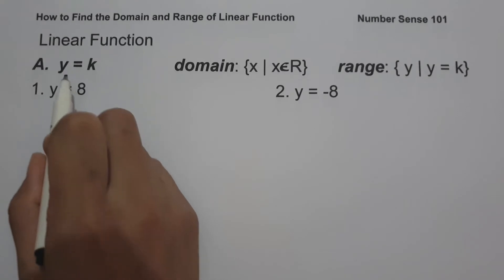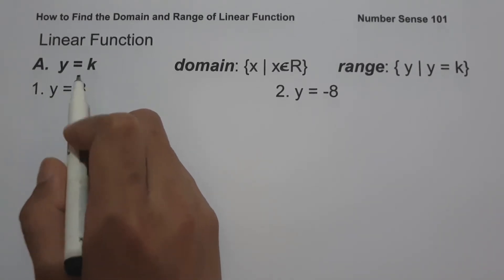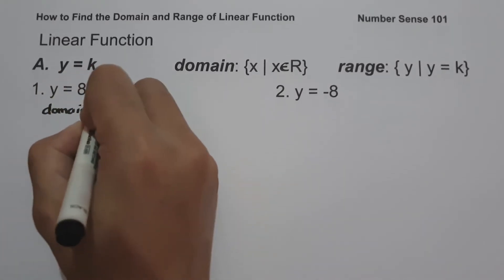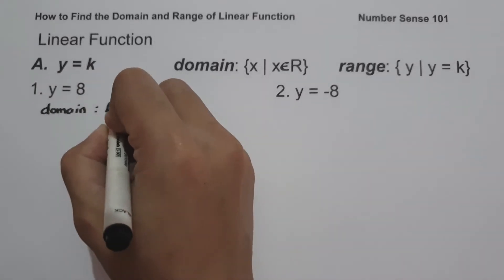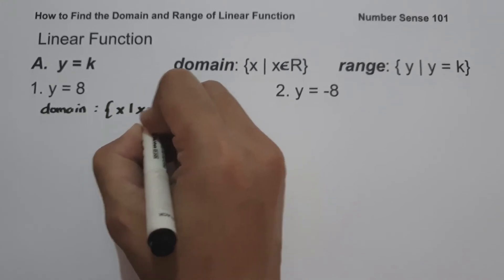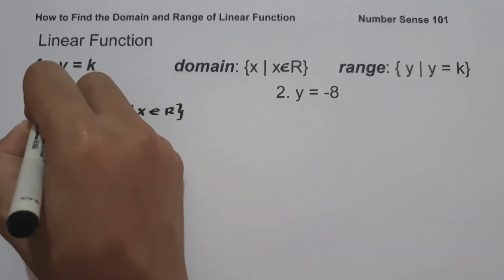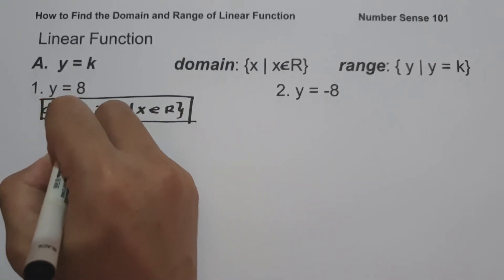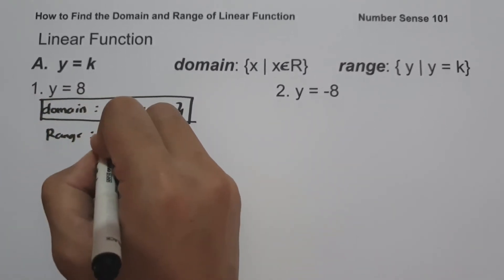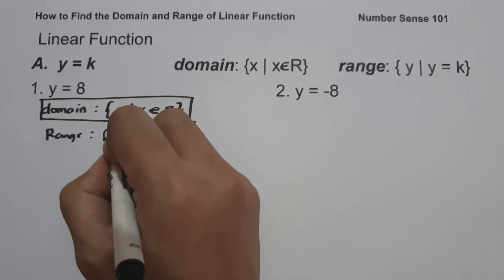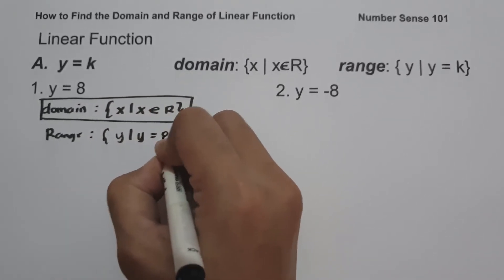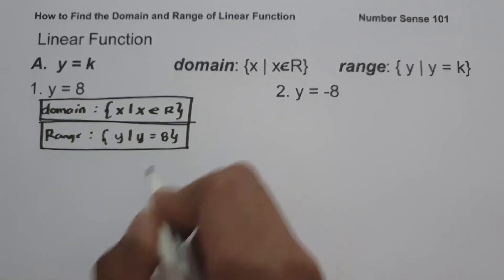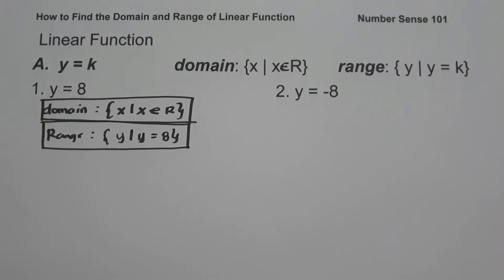As you can see, this function is written in the form of y equals k. To write the domain: the domain is the set of values of x such that x is the set of all real numbers. And to write the range: the range is the set of values of y such that y equals 8. This will be our range.